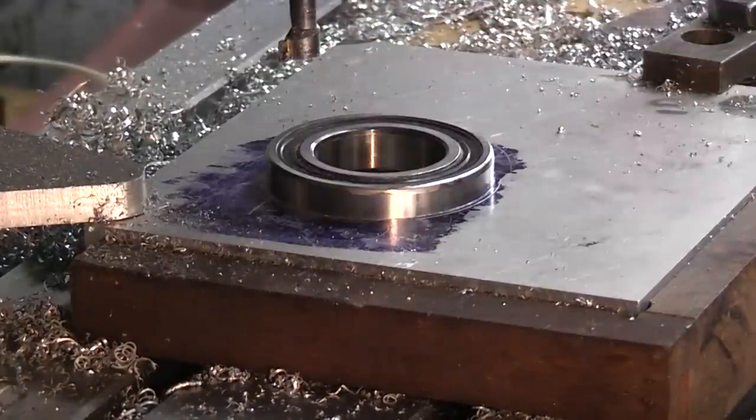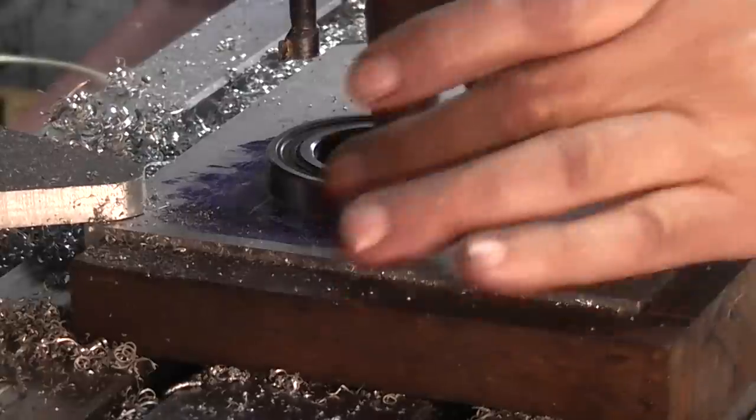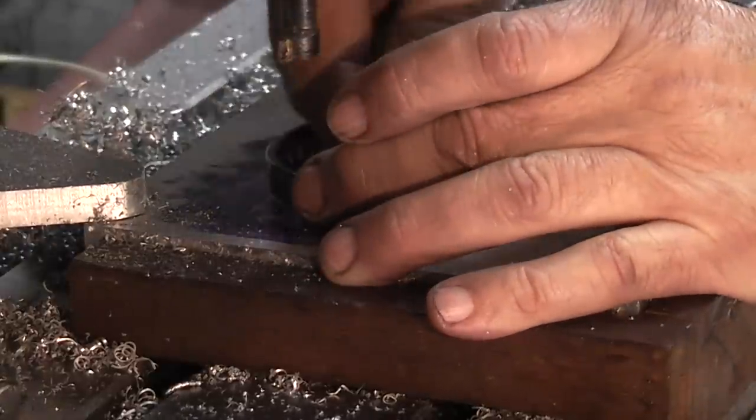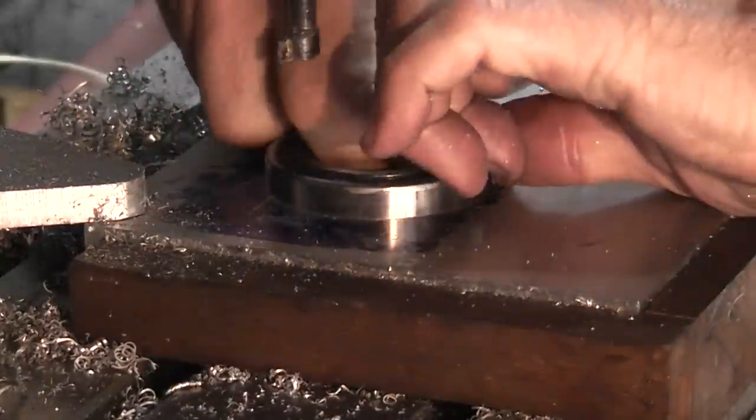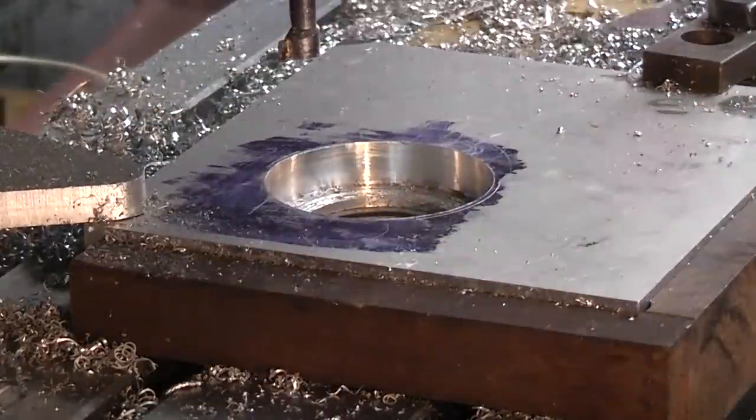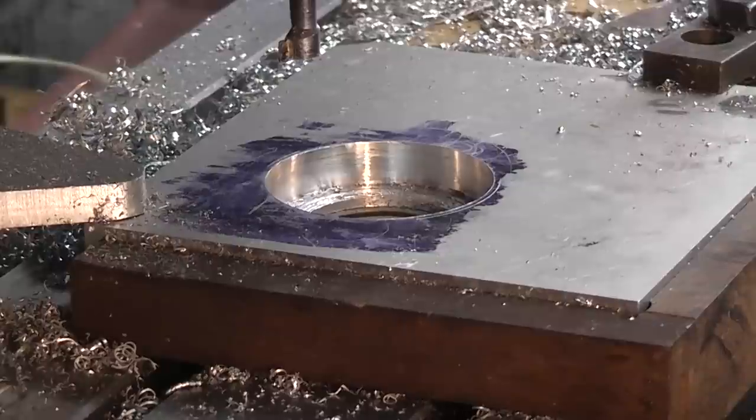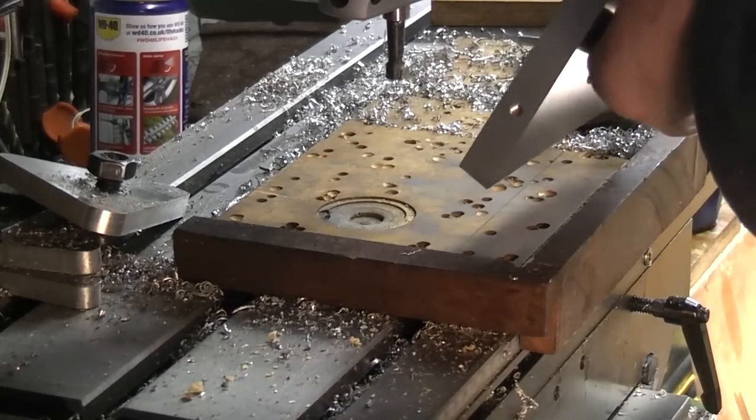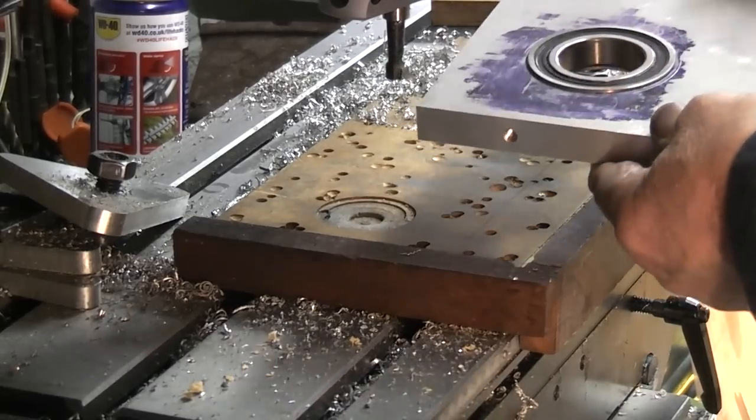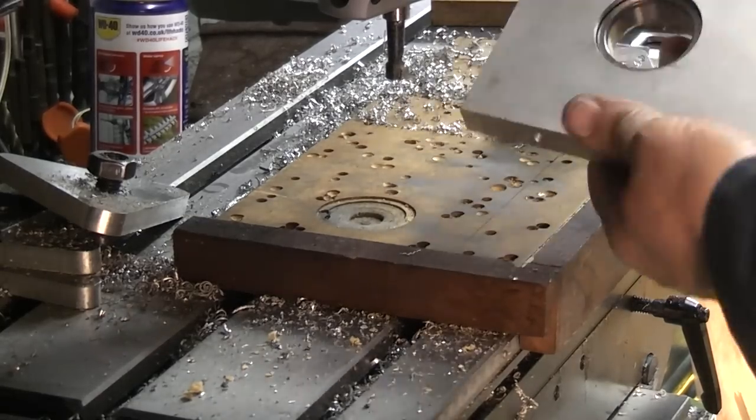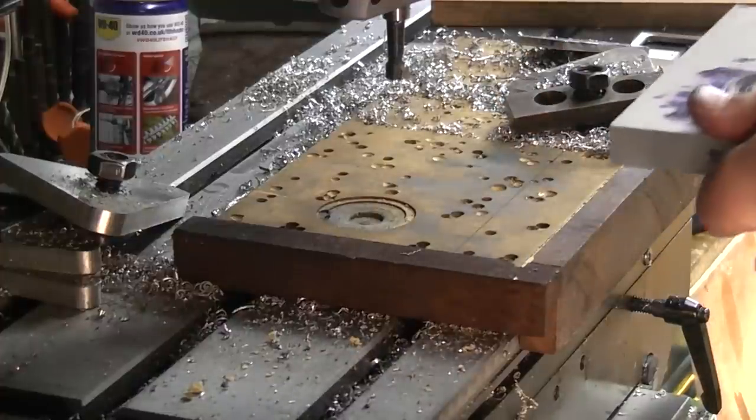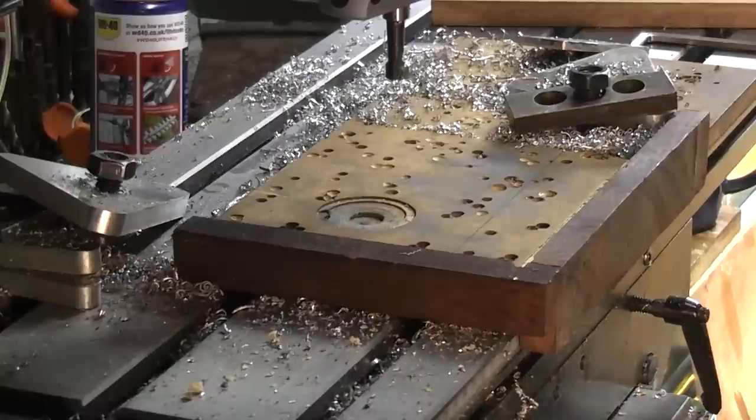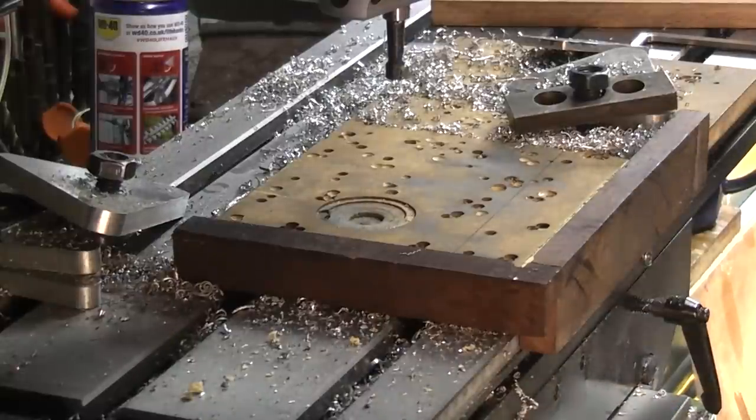So that bearing just drops onto the lead and then when I tap it in I know it's square. I'm impressed with the accuracy you can get. The only thing I've got to do now is tidy the face up. I've fitted the bearing, it's fitted nicely into the bore. So that one's done. So I have to do the same thing all over again on the other plate.